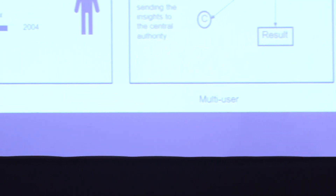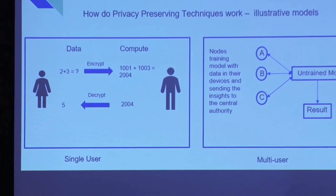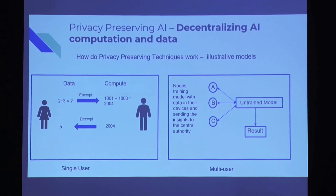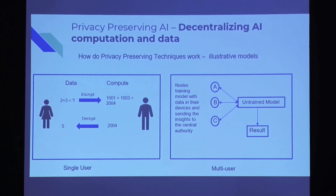The first approach is separating data and computing for a single user. You have an individual who wants to perform a computation — say, addition between two numbers. Instead of sharing raw data with the server, she only sends the encrypted data. This is homomorphic encryption — it encrypts the data and the server performs computation only on the encrypted data. The system then decrypts and sends the result to the user, so no raw data was ever shared between the user and the server.